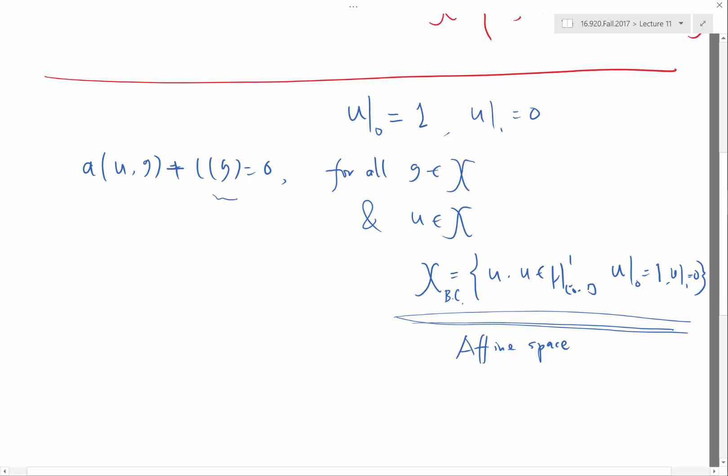So our test function g, in this case, we should still have our u should be in here. But our test function g actually shouldn't be within that space. Our test function g should be a vector that lies because our test function should be the difference between two arbitrary functions within that space. So g, as opposed to be in this X_bc, should be in X_0, which is the same space except for satisfying the homogeneous version of the boundary condition. Does it make sense? Because g actually represents the difference between two vectors within this X_bc.